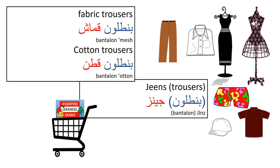For fabric types: 'bantalon imesh' — trousers made of fabric; 'bantalon uton' — made of cotton. Note in Lebanese the letter qaf is often replaced with a glottal stop, so 'uton' not 'quton.' For jeans: just say 'jeans' or 'bantalon jeans.' For shorts: 'short' with a rolled R.